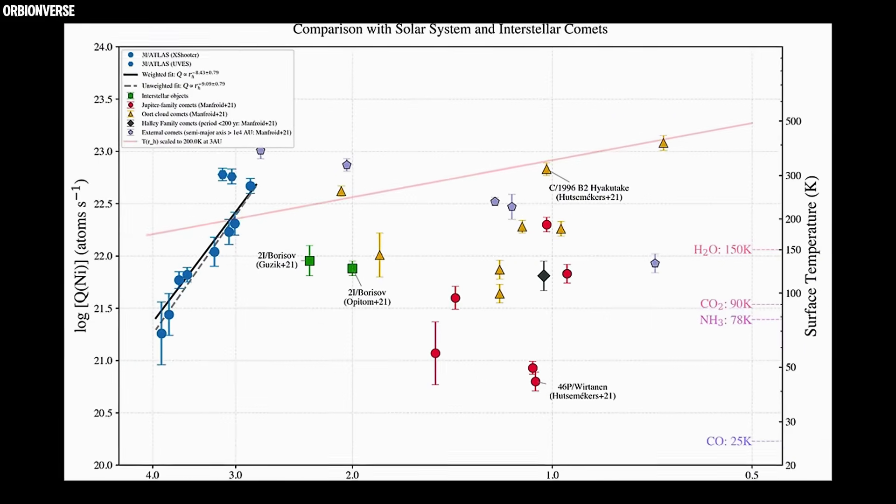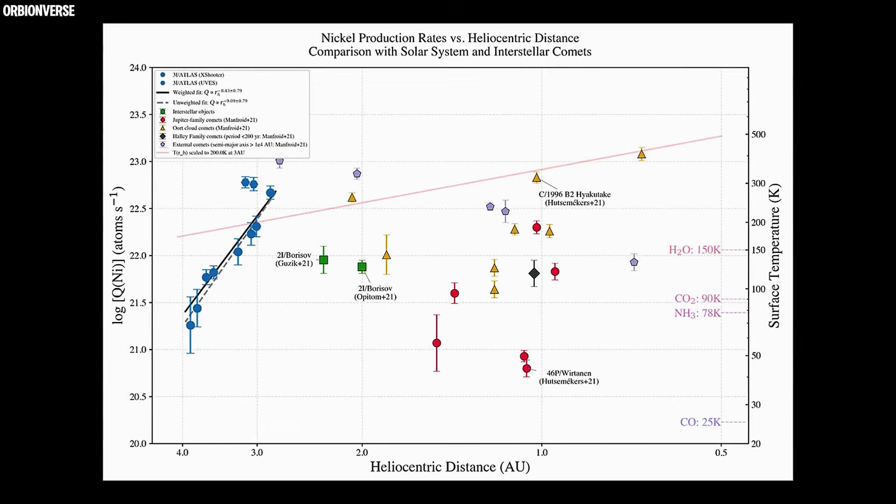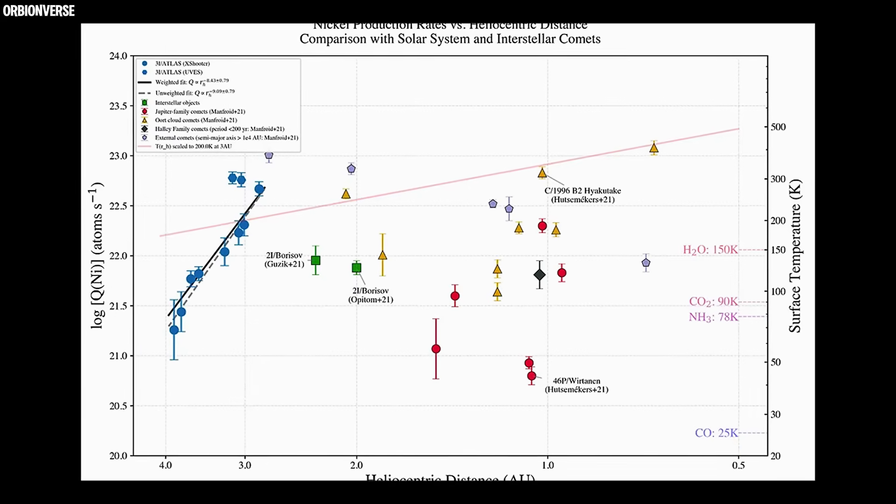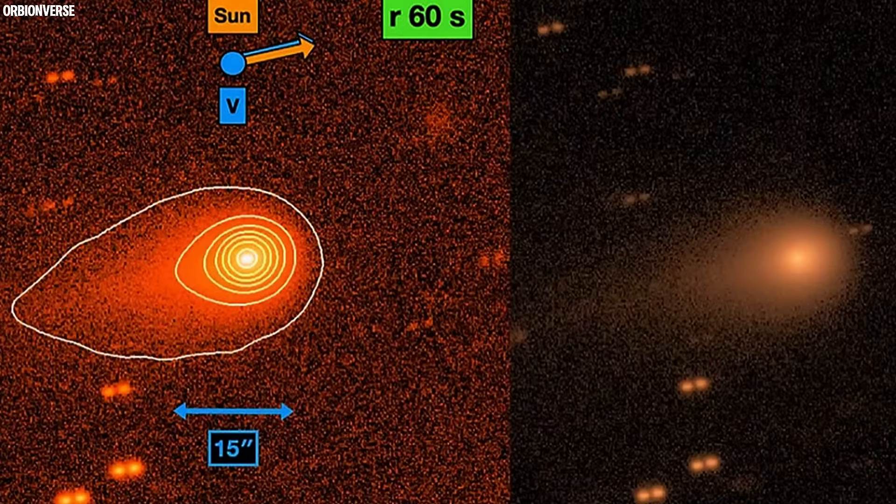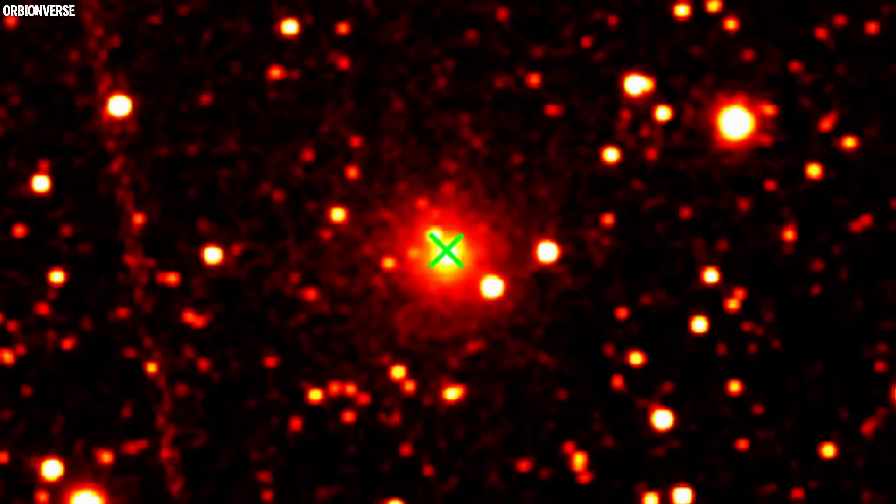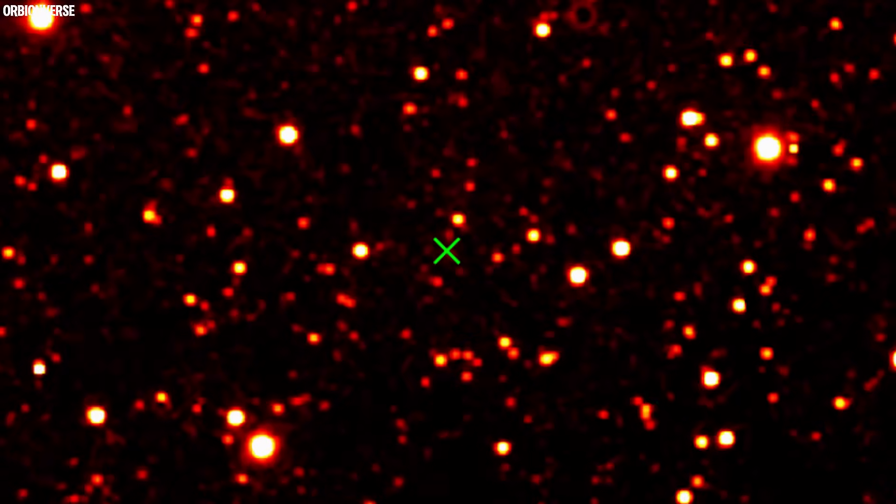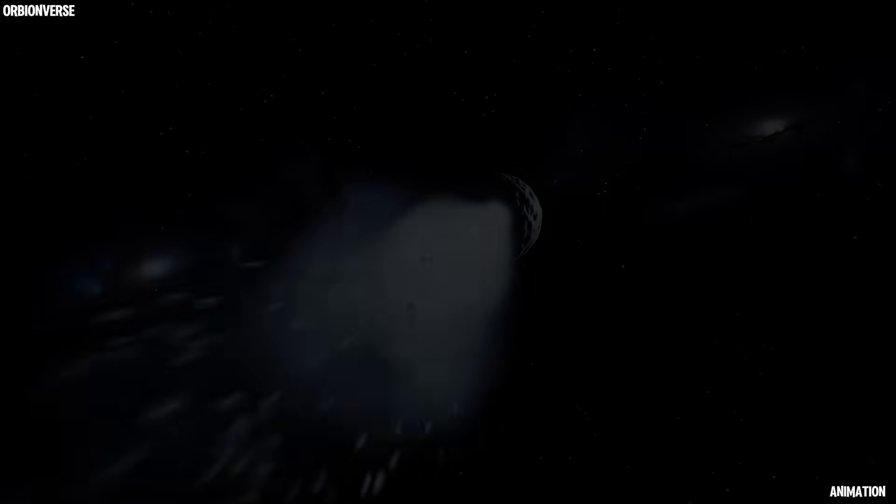The ratio of CO2 to H2O was roughly 8 to 1, one of the highest ever recorded for any comet, interstellar or otherwise. Why is there so much carbon dioxide and so little water? Could 3i-ATLAS have formed in an environment completely unlike our solar system? Or has something about its surface trapped the water inside?